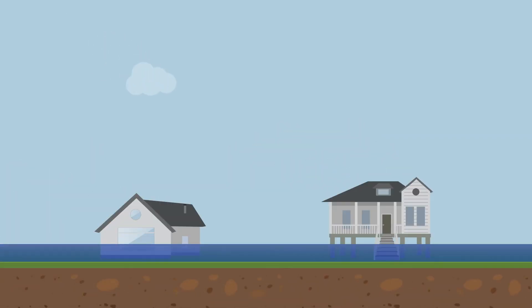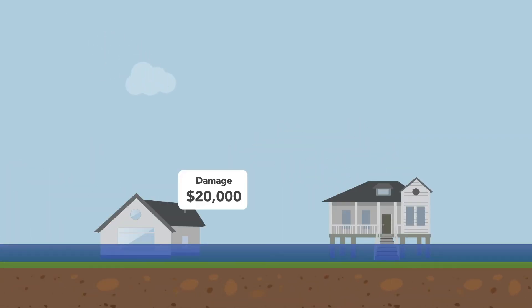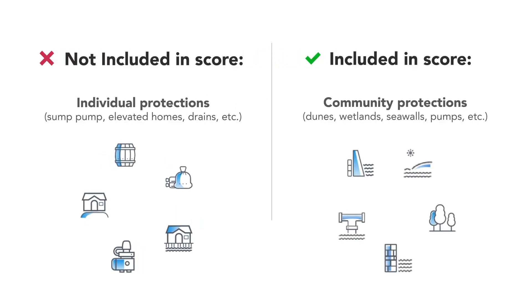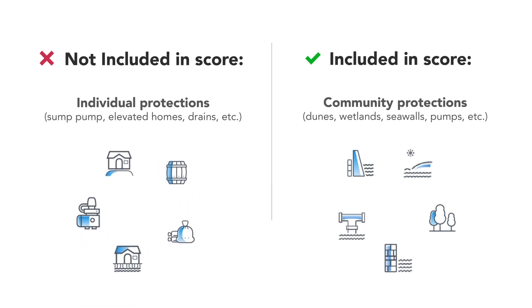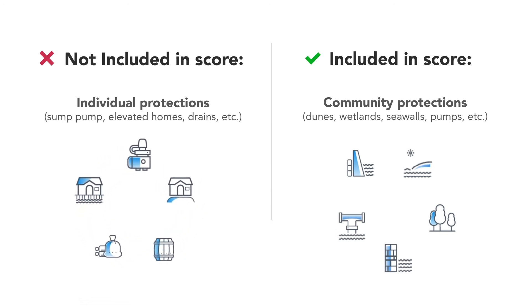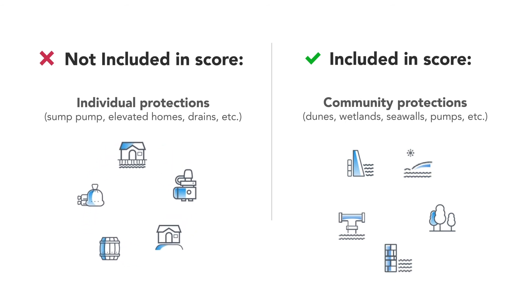The estimated damage costs provided by Flood Factor take building characteristics into consideration. However, the scores are associated with risk of flooding, not damage — elevated homes can still have a high score due to the high risk of water reaching the structure. Individual home protections such as sump pumps, drains, or raising the home on stilts are not incorporated into a property's Flood Factor because this information is not readily available nationally.